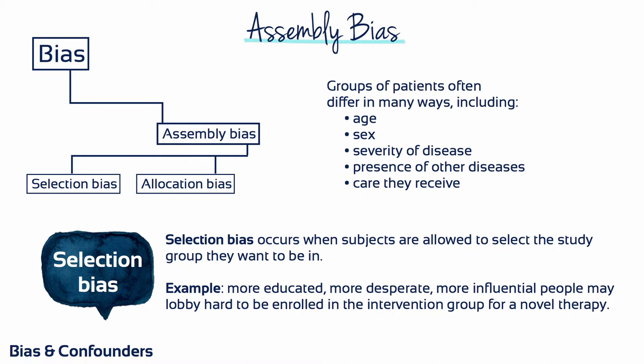Selection bias is considered to have occurred when subjects are allowed to select the study group they want to be in. For example, more educated, or more desperate, or more influential people may lobby hard to be enrolled in the intervention group for a novel therapy.